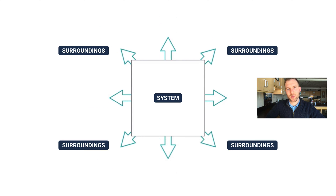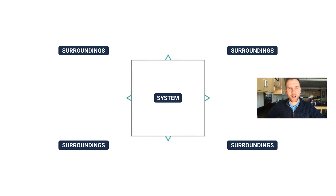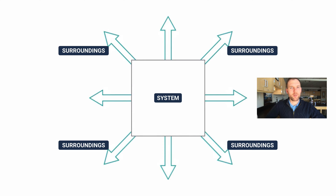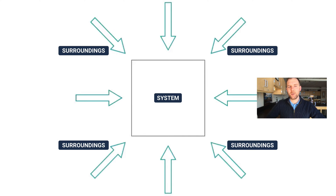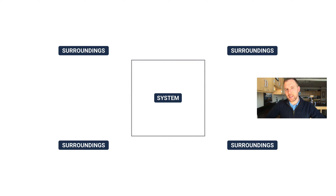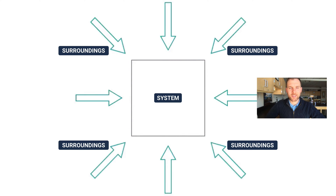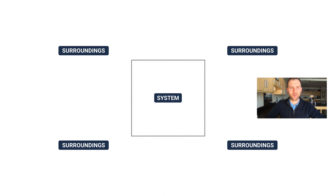An endothermic reaction is very similar — it's just the opposite direction of heat flow. You still have a system, you still have surroundings, but in an endothermic reaction the system is absorbing heat energy from its surroundings. One way I keep these straight is: exo is heat exiting, endo is heat entering.